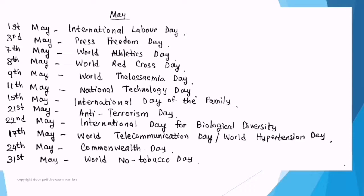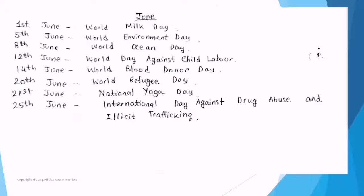Correction: 17th May is World Telecommunications Day or World Hypertension Day. Hypertension means high blood pressure — this disease is increasing and is now being observed among young adults too, so please check your blood pressure at least twice a year. 24th May — Commonwealth Day. 27th May — International Day for Biological Diversity. 31st May — World No Tobacco Day.